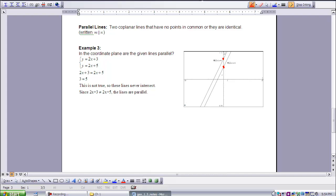We could also do it mathematically. Both equations are set equal to y, so they should be equal to each other. 2x + 3 equals 2x + 5. The 2x would cancel. 3 does not equal 5. This is not a true statement, so these lines will never intersect. Since 2x + 3 is not equal to 2x + 5, the lines are parallel.